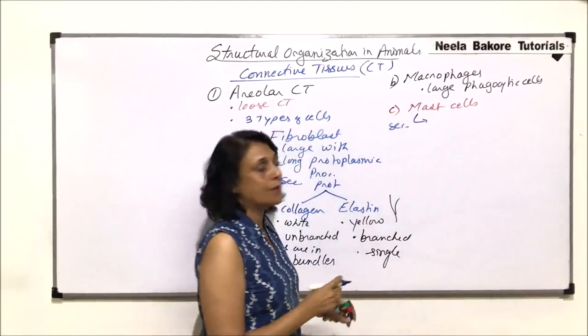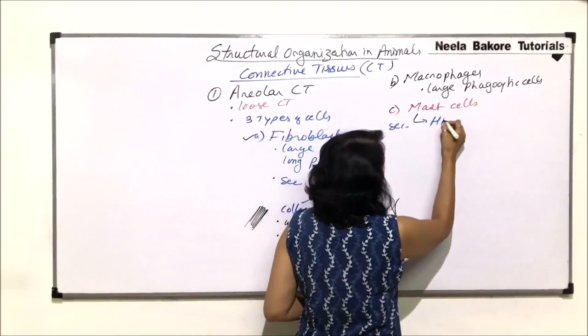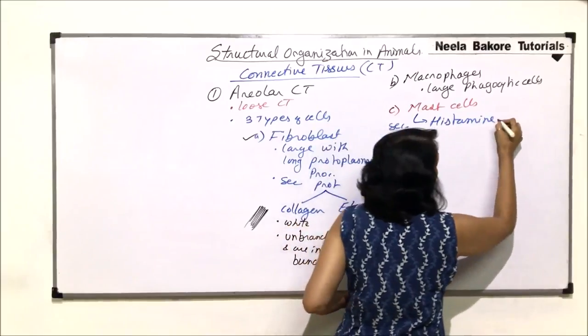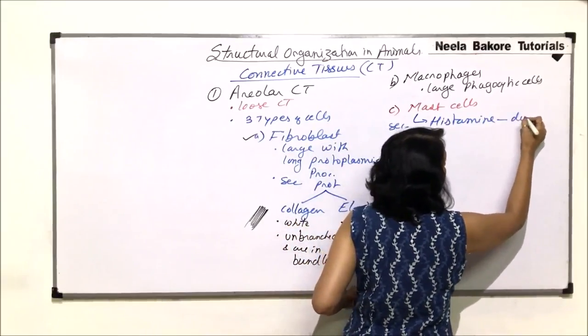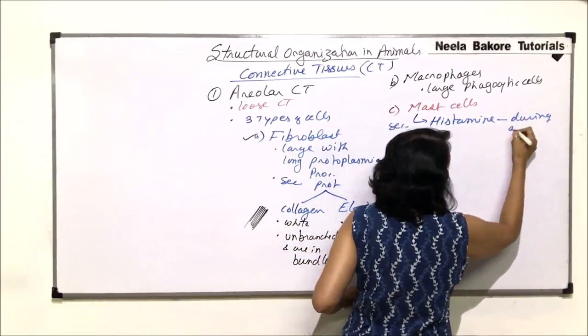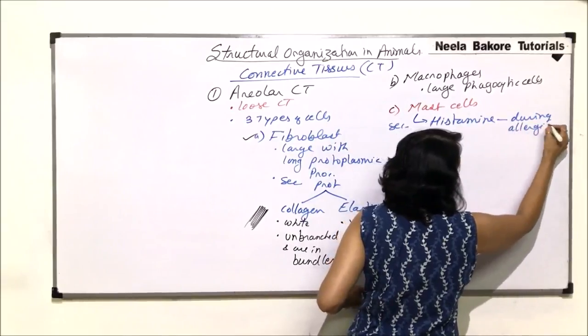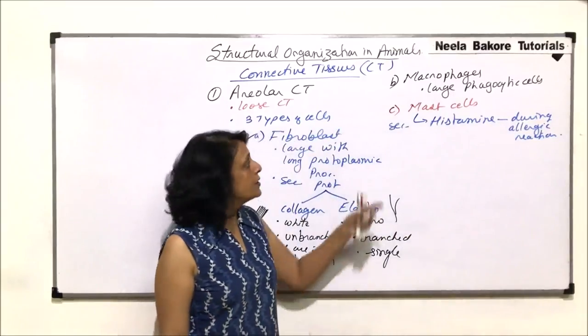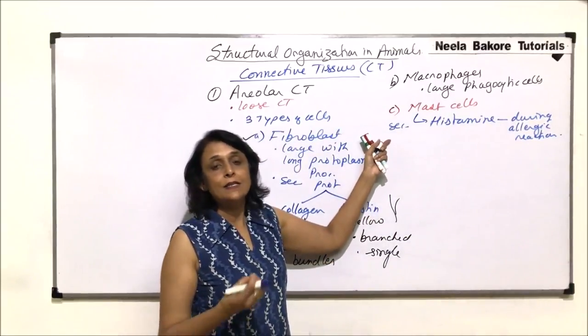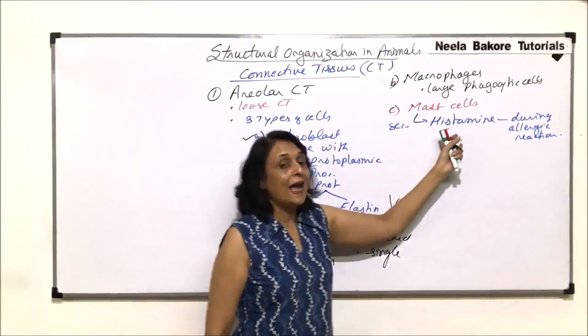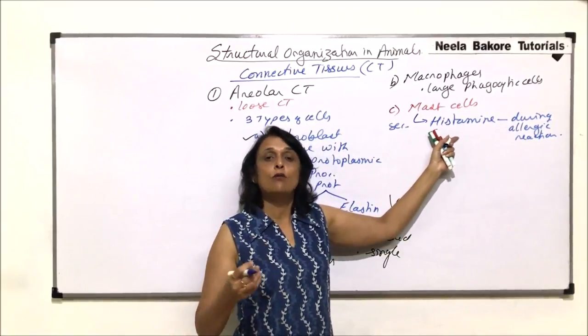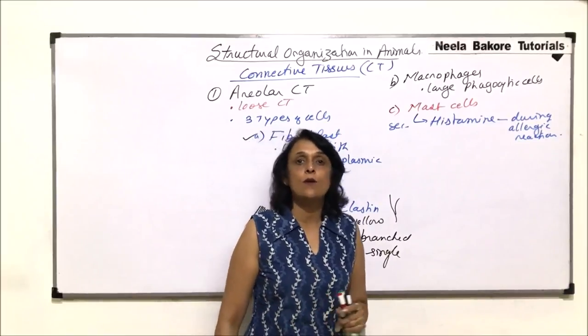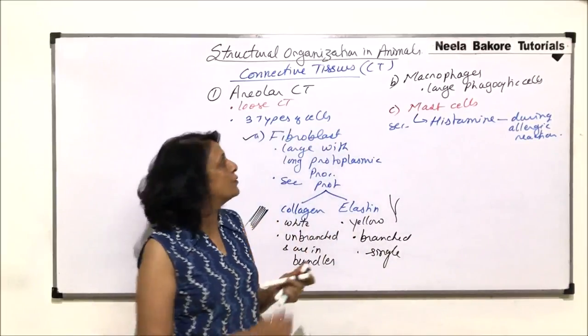Three important substances. One is histamine, which is secreted during allergic reactions. So whenever an allergen enters, it stimulates the secretion of histamine. And that is what causes all those allergic reactions. And the drugs which are taken against allergy are known as antihistaminic drugs.